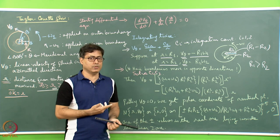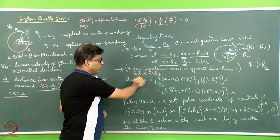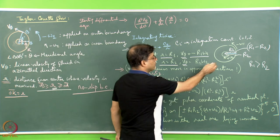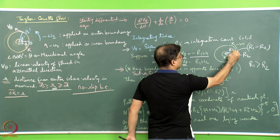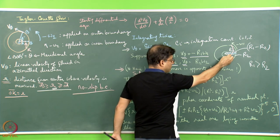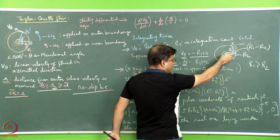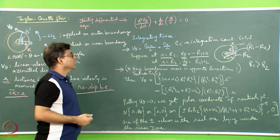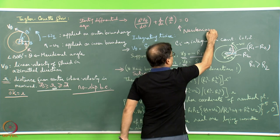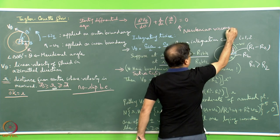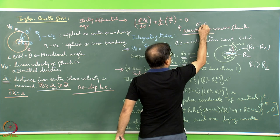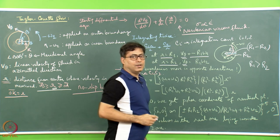After such rotation, the initial blue line will deform into a curved profile. This is expected because the inner circle rotates, bringing point A to A dash and point B to B dash. We are dealing with a Newtonian viscous fluid, where stress is proportional to strain rate.